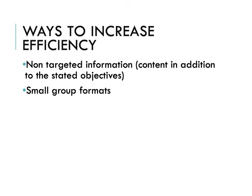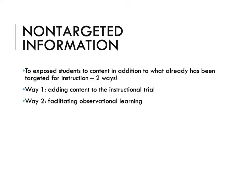Here are some ways to increase efficiency. The first way is to add non-targeted information, and the second way is to conduct small group format instruction rather than a one-to-one format. When taught in a small group format, the instructor can teach more than one student at the same time, and each student can acquire skills by observing the instruction provided to other students in the group. The first way instruction can be more efficient is to expose students to content in addition to what has already been targeted for instruction. There are two ways to do this: the first is through adding content to the instructional trial, and the second is through facilitating observational learning.